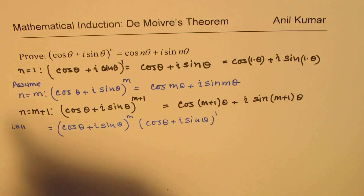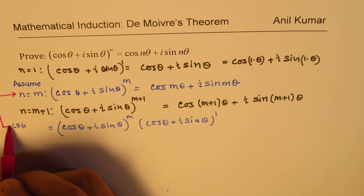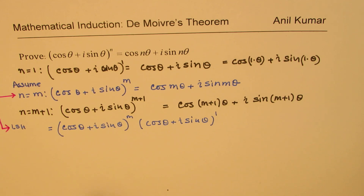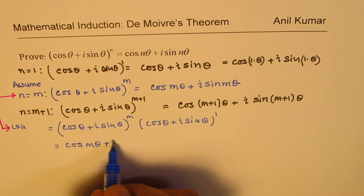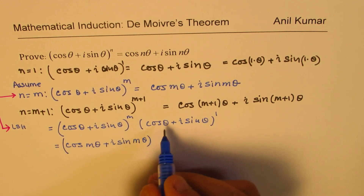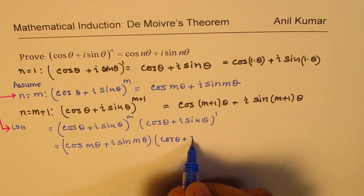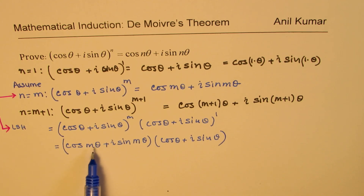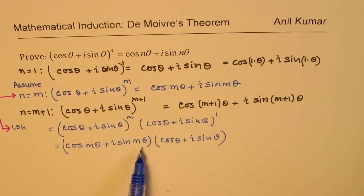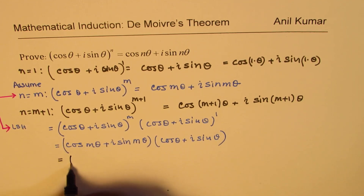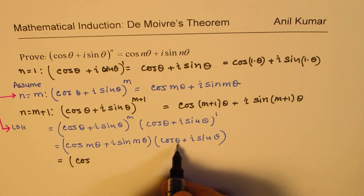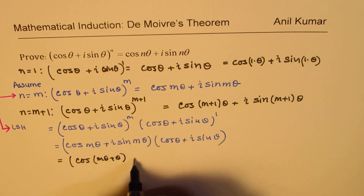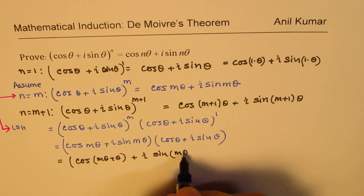Now we know already from our assumption that the first term here is equal to cos(mθ) + i sin(mθ), and then the next term is cos θ + i sin θ. Now, what is the product of two complex numbers? The product of two complex numbers: their absolute values get multiplied and their arguments get added up. So in this case, using that, we get cos(mθ + θ) + i sin(mθ + θ).